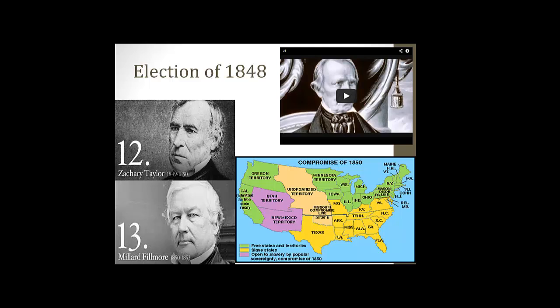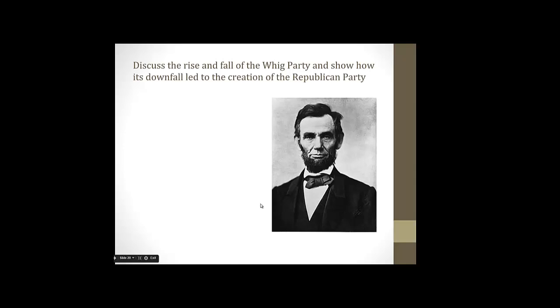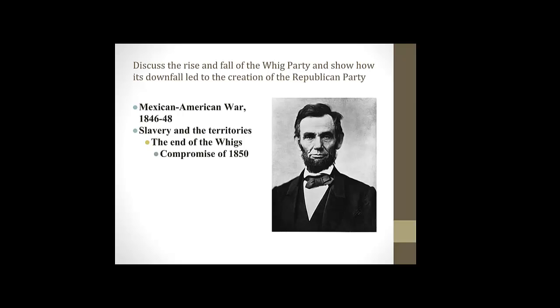But Taylor dies after eating contaminated cherries infected with cholera. Millard Fillmore becomes president and is not a very adept leader. The South is able to walk all over Fillmore, and this begins the downfall of the Whig Party. Out of the arguments over the Compromise of 1850, tensions between northern Whigs and southern Whigs become irreconcilable. People are no longer getting along, and further tensions arise once we get to the Kansas-Nebraska Act of 1854.